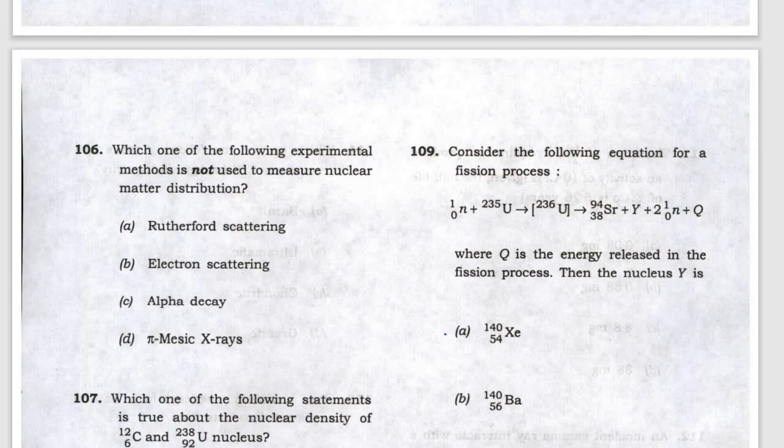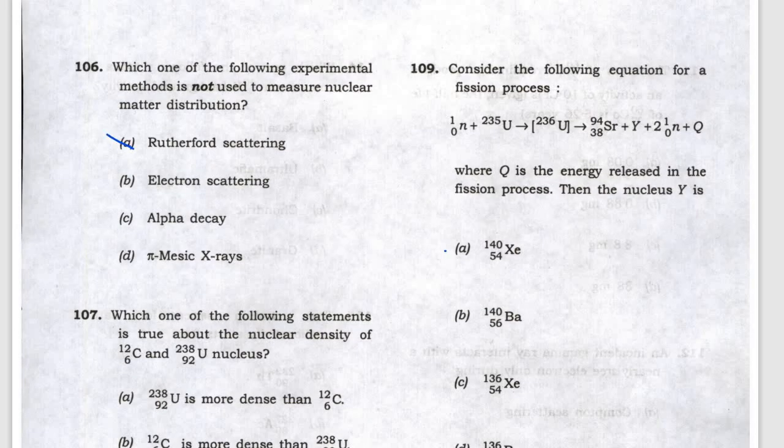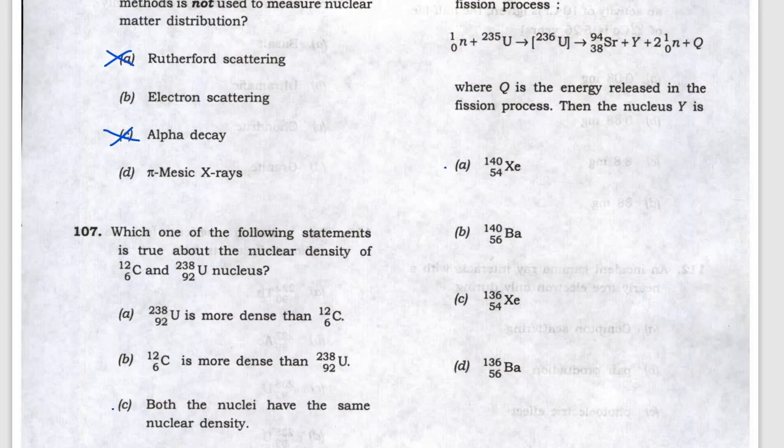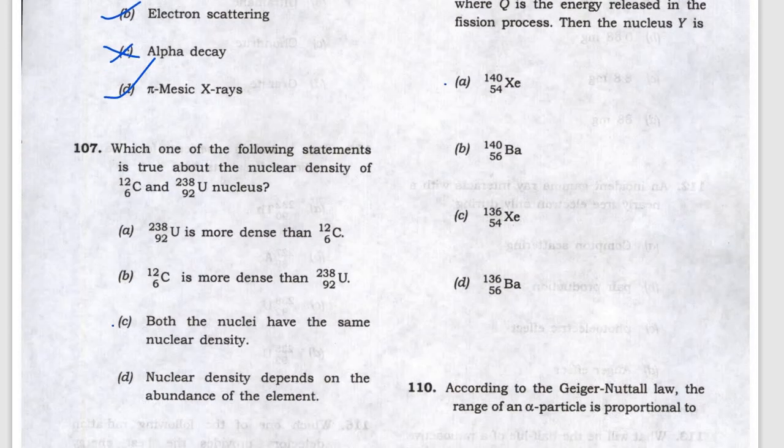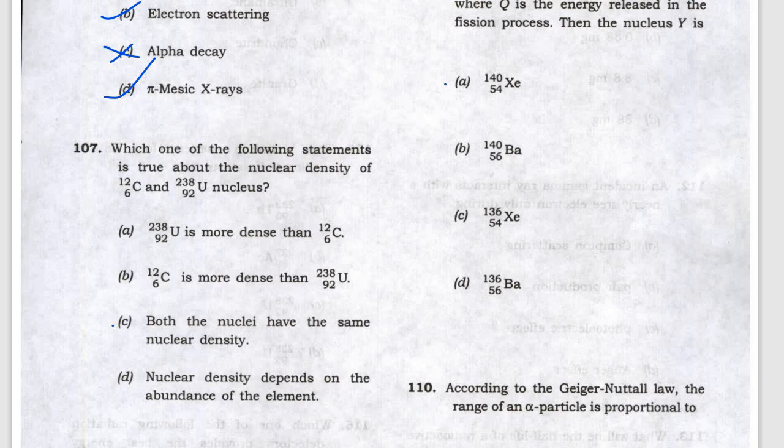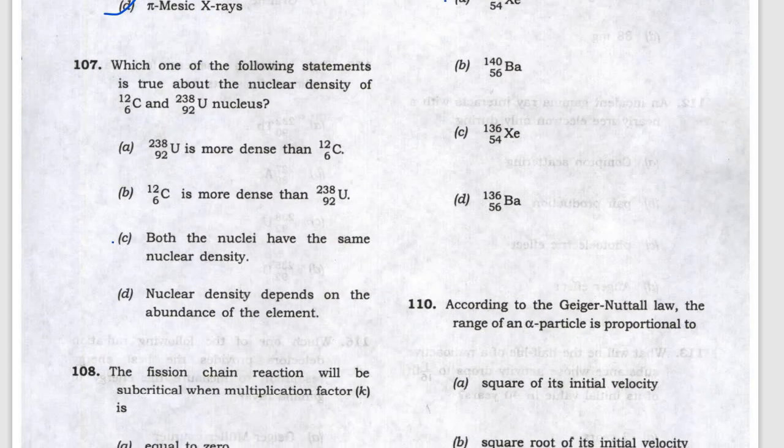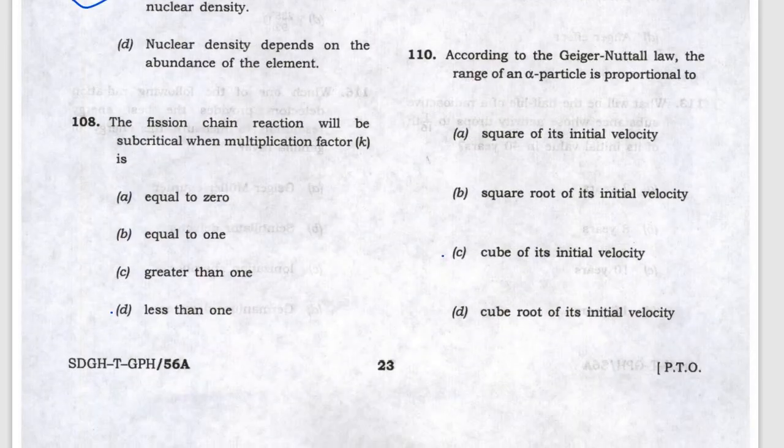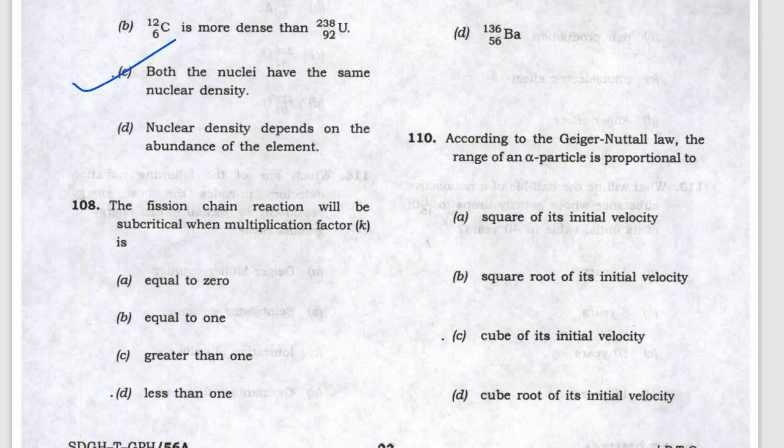Question 106 is confusing because these two are both options, Rutherford and alpha, so either could be the answer. Which statement is true about nuclear density? Nuclear density is constant, so C is the answer. For fission chain reaction, the multiplication factor is less than 1.